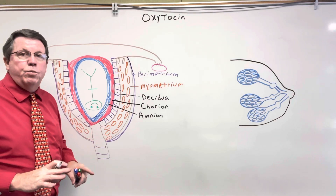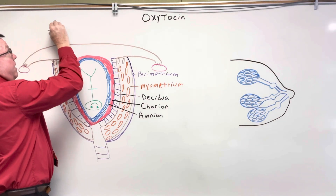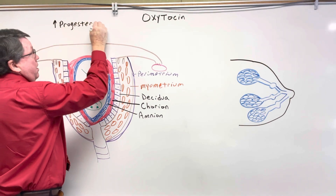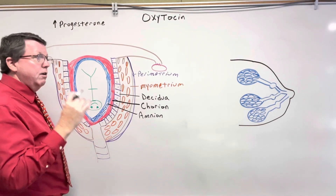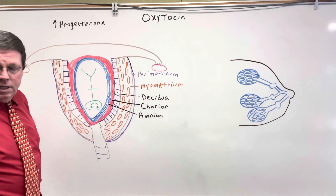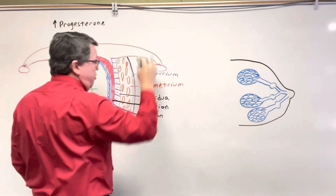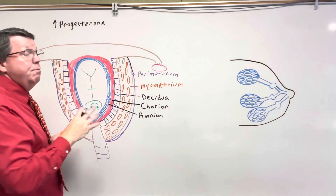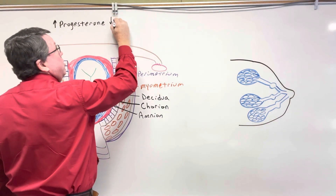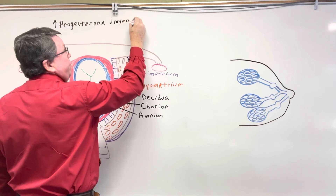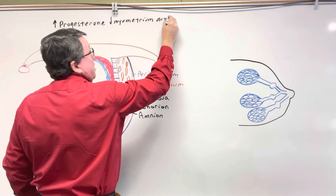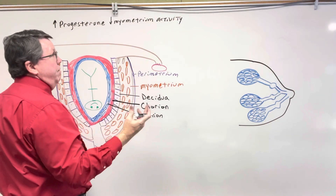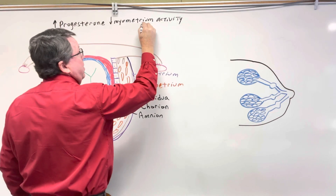Let's talk about what happens in pregnancy. When a woman gets pregnant, the amount of progesterone starts to increase. The function of progesterone in pregnancy is to keep the myometrium cells from contracting — to keep the muscle from pushing the baby out before it's born. So it decreases myometrium activity and it's also going to basically inhibit labor.